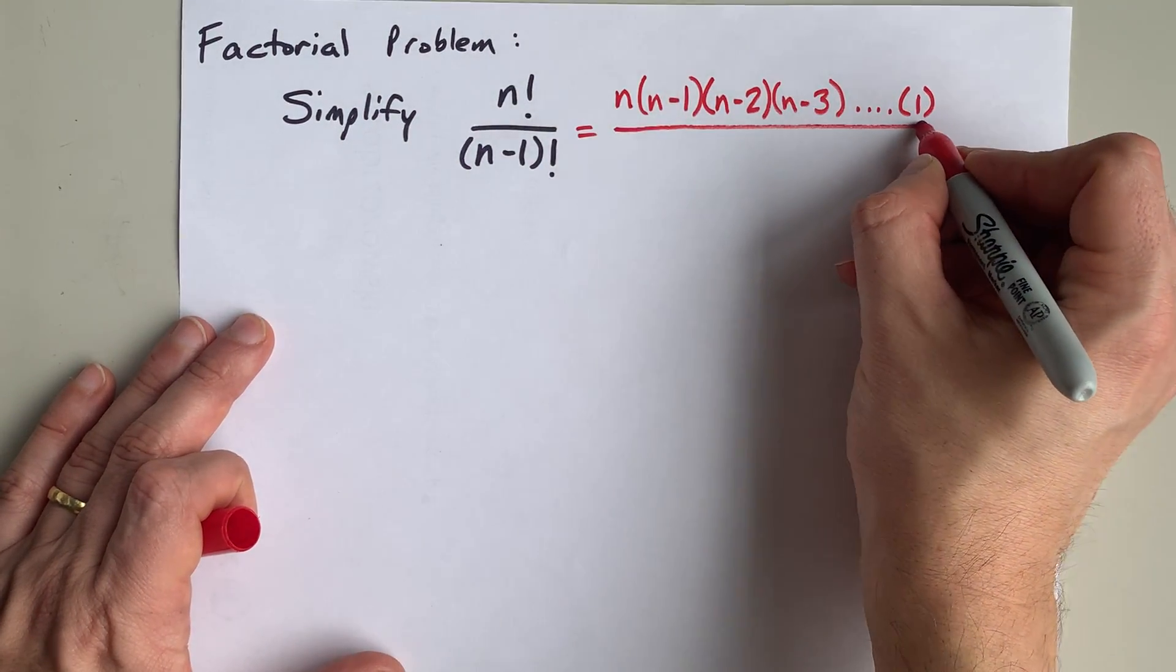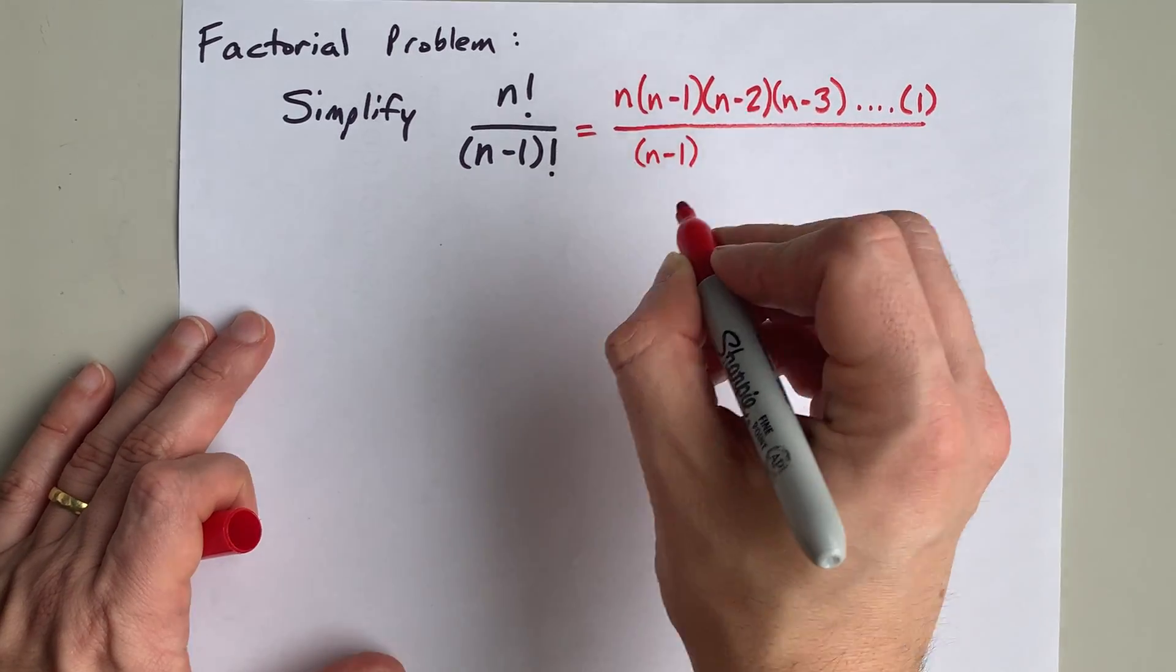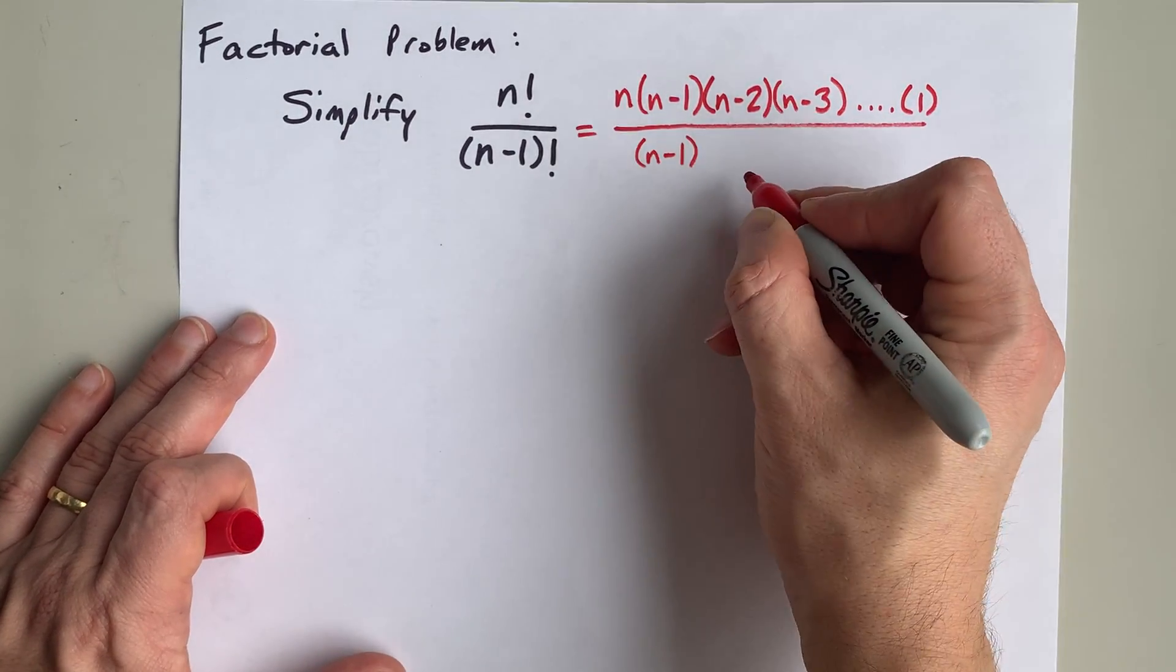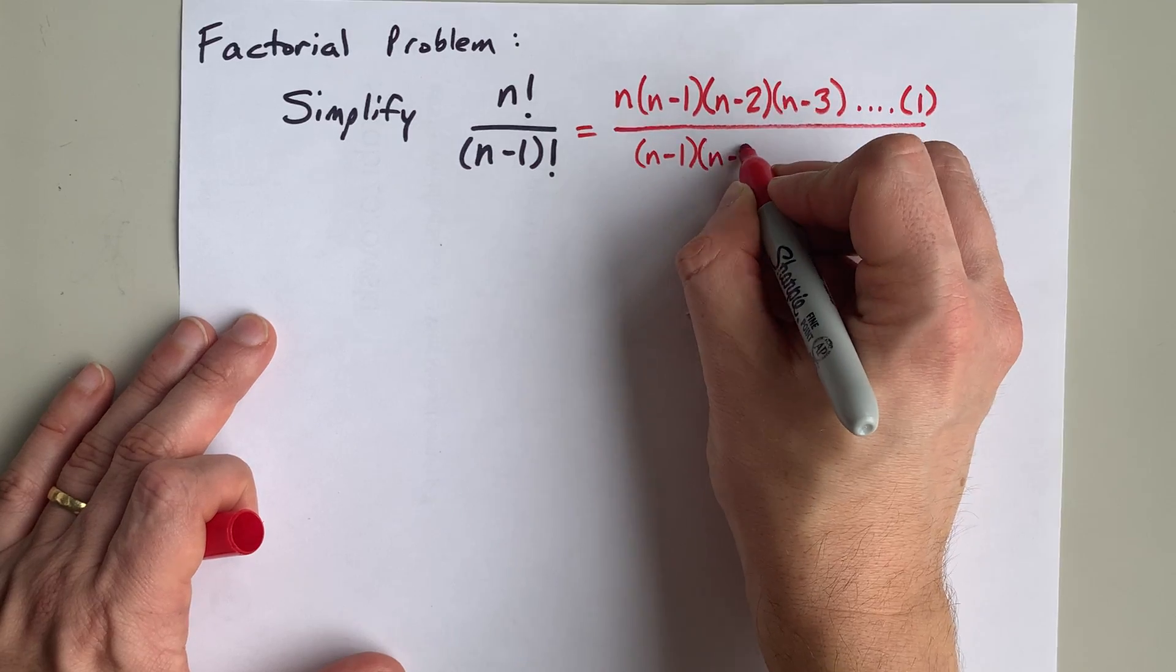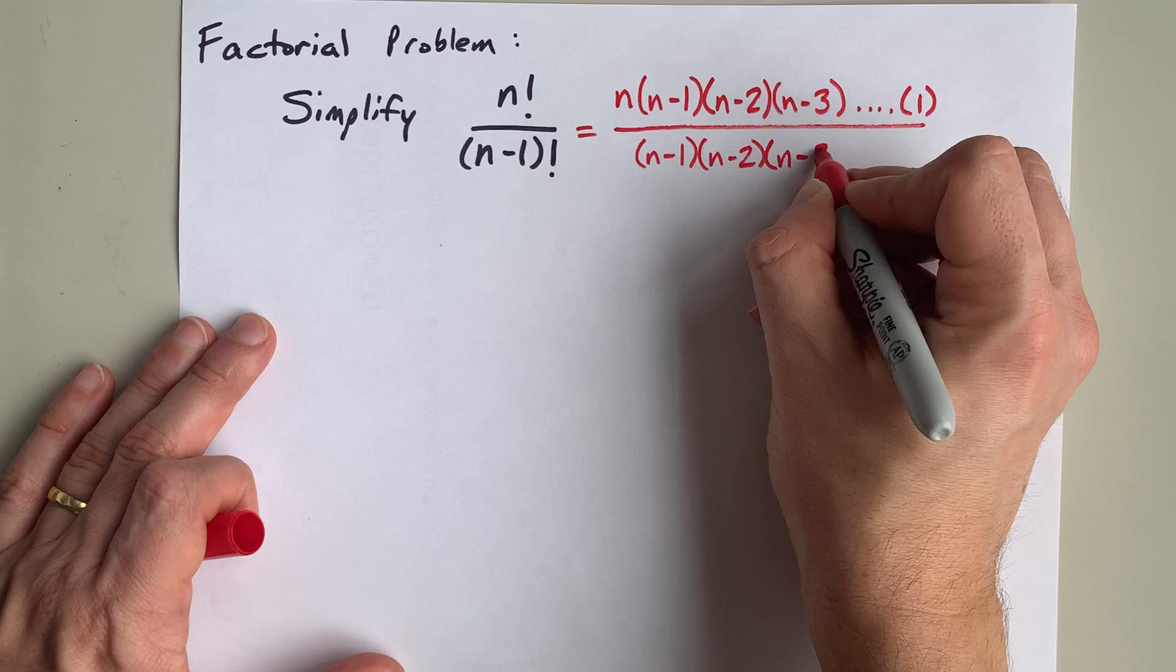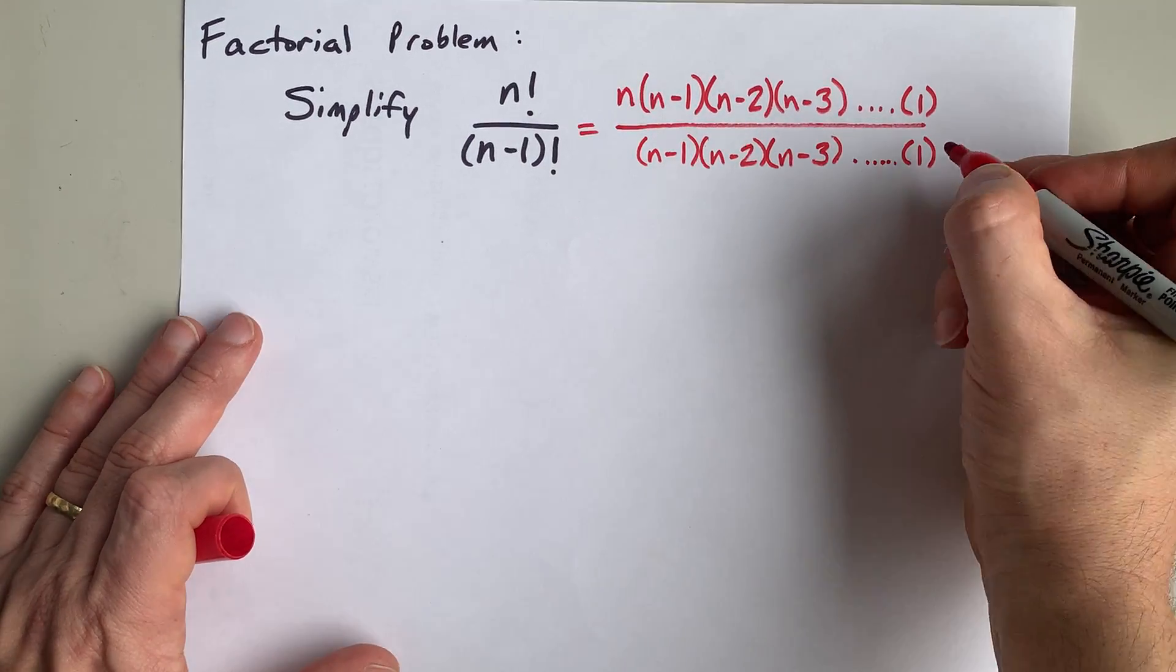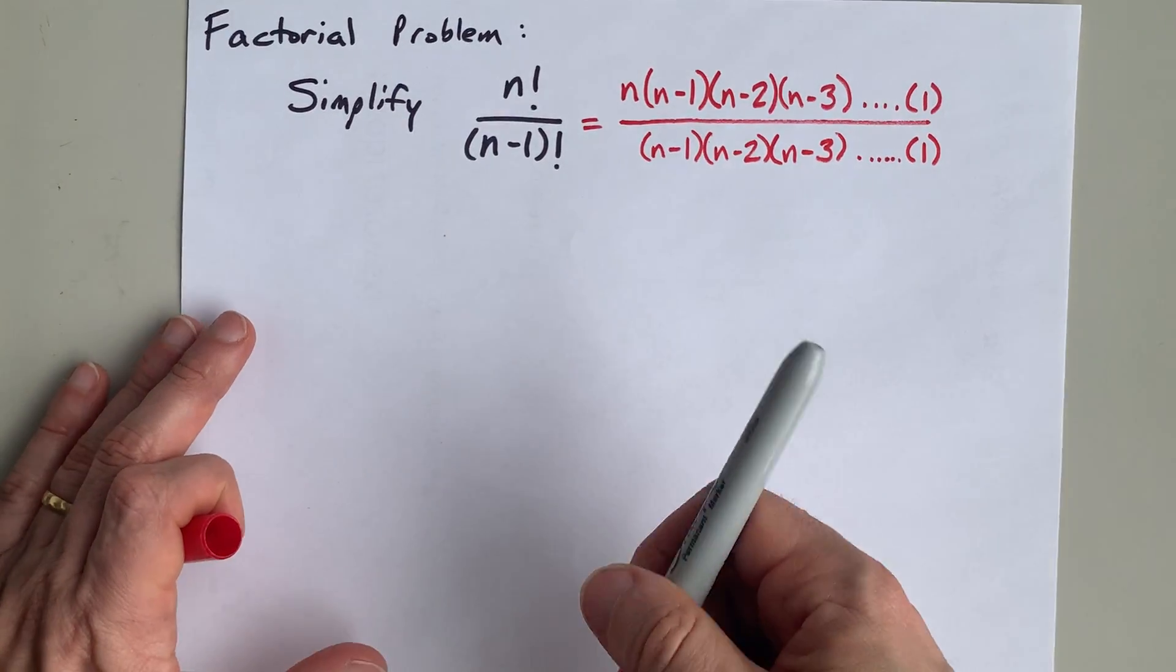Now, on the bottom of this fraction, the first number is n minus 1, and you're going to multiply it by whatever 1 less than that is, which is n minus 2, and you're going to multiply that by whatever 1 less than that is over and over and over again until you get to the number 1.